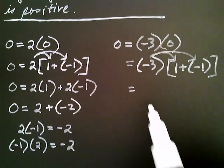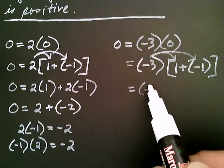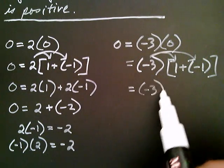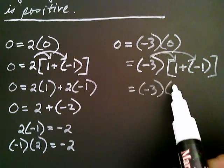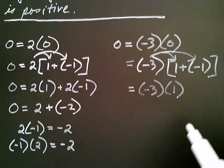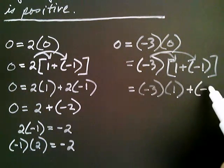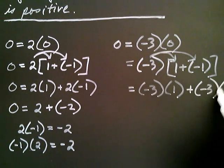So let's write down what we get: negative three multiplied by one, and negative three multiplied by negative one.